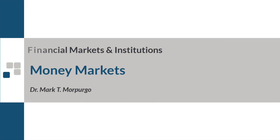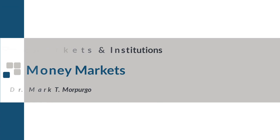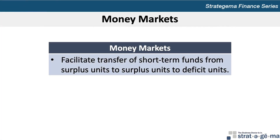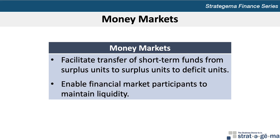This video provides an overview of the major concepts covered in Chapter 6, Money Markets. Money markets facilitate the transfer of short-term funds from individuals, corporations, or governments with excess funds to those with deficient funds, and money markets enable financial market participants to maintain liquidity.